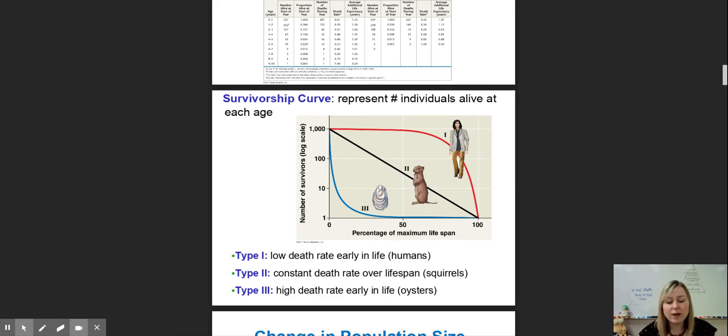A Type 2 survivorship curve is typical for prey animals. Any animal that is preyed upon as babies and adults experiences a constant death rate. As soon as they are born, there's a lot of them, but every single year their chances of getting eaten go up. There's very few that ever make it to old age because by then they've gotten eaten by a predator.